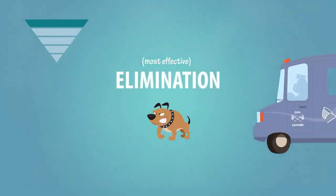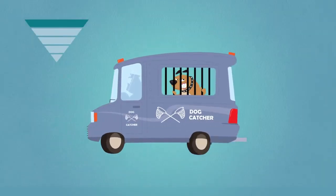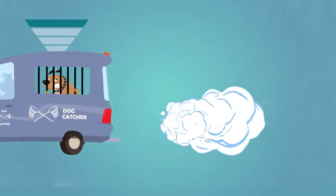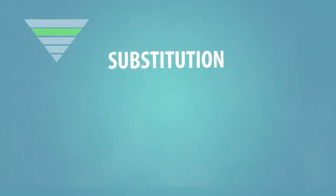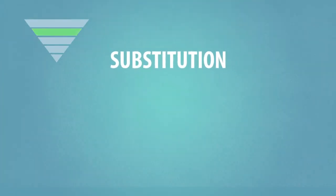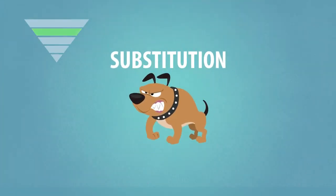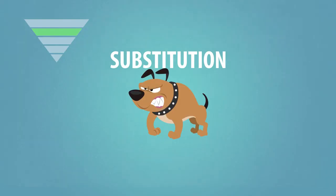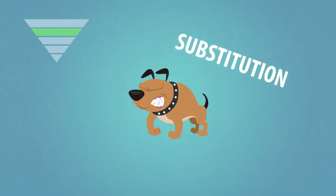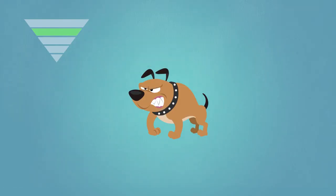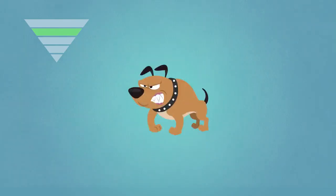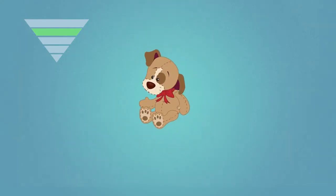Elimination — physically removing the hazard — is the most effective hazard control. Substitution, the second most effective hazard control, involves replacing something that produces a hazard, similar to elimination, with something that does not produce a hazard.